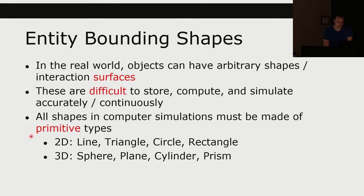All primitive shapes in computer simulations must be made of primitive types. In the 2D case, we can have lines, triangles, circles, and rectangles. In the 3D case, we could have spheres, planes, cylinders, and prisms.